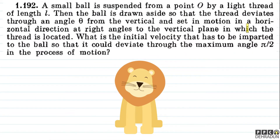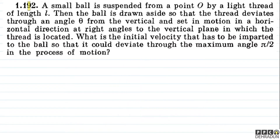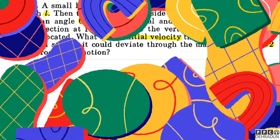Let's have a look at this beautiful problem from Irodov. The question says: a small ball is suspended from a point O by a light thread of length L. The ball is drawn aside so that the thread deviates through an angle theta from the vertical, and set in motion in a horizontal direction at right angles to the vertical plane in which the thread is located. What is the initial velocity that has to be imparted to the ball so that it could deviate through the maximum angle pi by 2 in the process of motion?